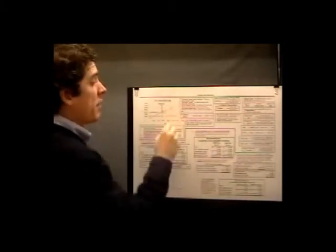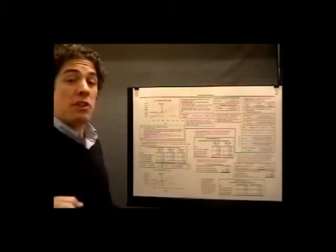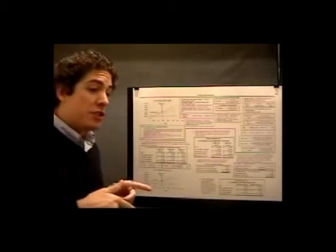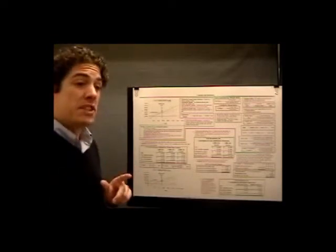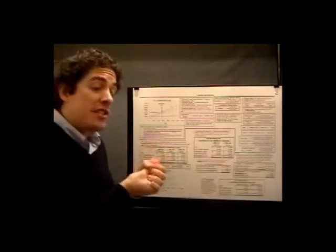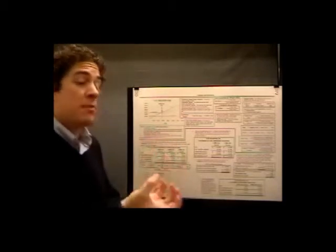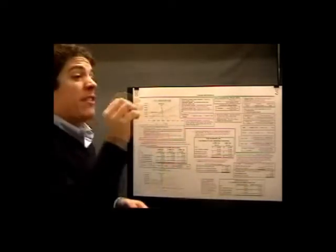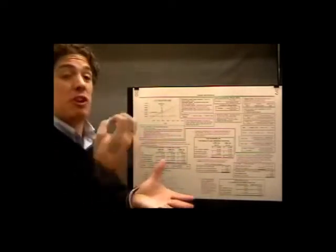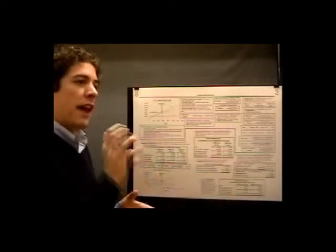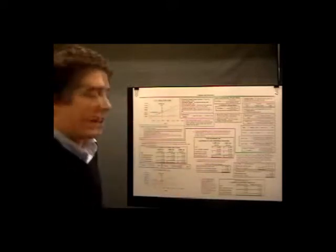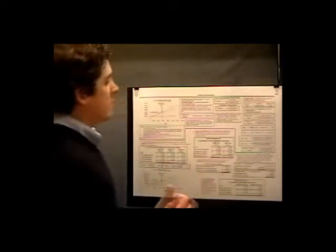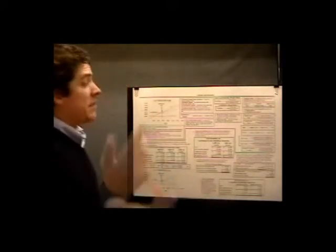Next, let's talk about the contribution margin income statement from Lesson 5. We went through the difference between the traditional income statement and the contribution margin income statement, and how absorption costing produced our traditional income statement, but then variable costing produces our contribution income statement. Now we're getting into variable costing and looking at the contribution income statement.